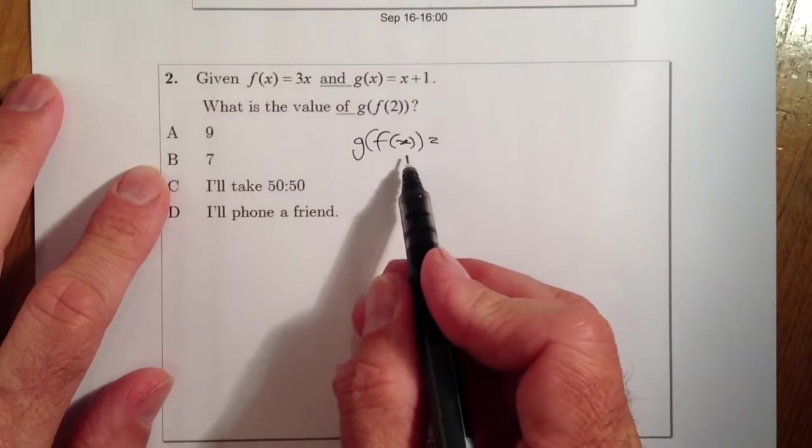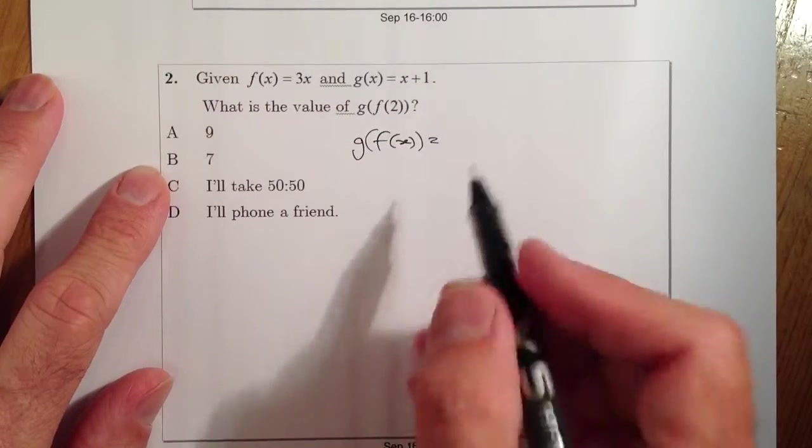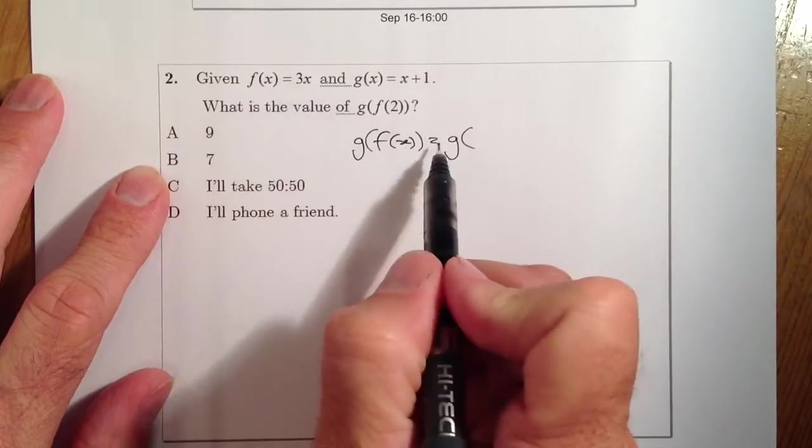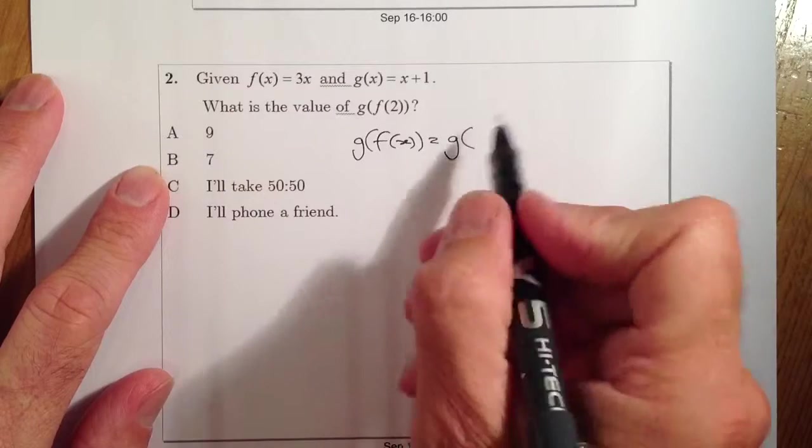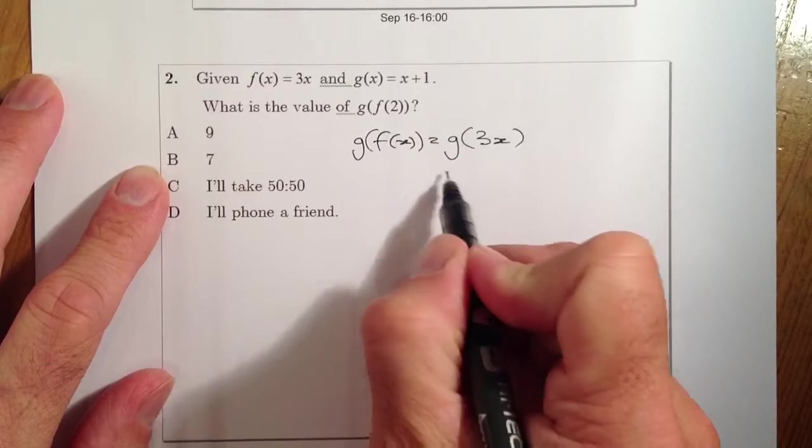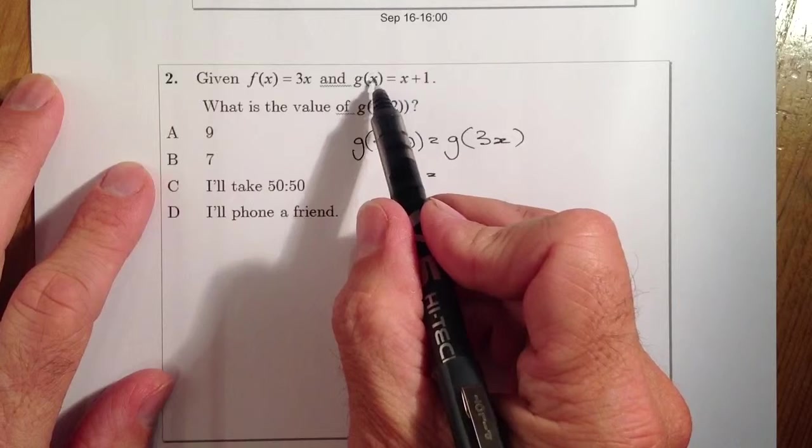Let's get a g of f of x function, and we'll go first of all. So the way I'm going to do that is I'm going to take the f of x function, and that's 3x, and I'm going to put it straight into here. I'm then going to use the g of x function, which is this one.